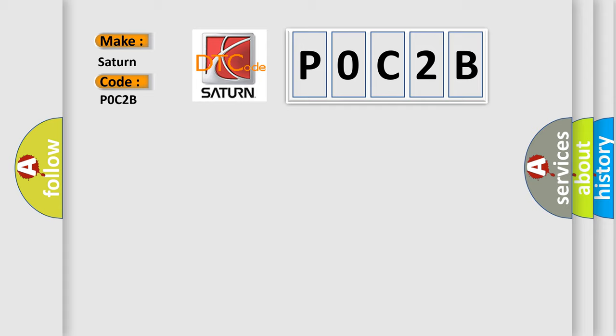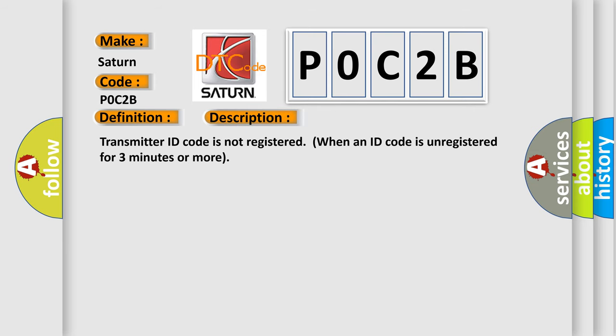The basic definition is Transmitter ID not registered. And now this is a short description of this DTC code: Transmitter ID code is not registered when an ID code is unregistered for three minutes or more.